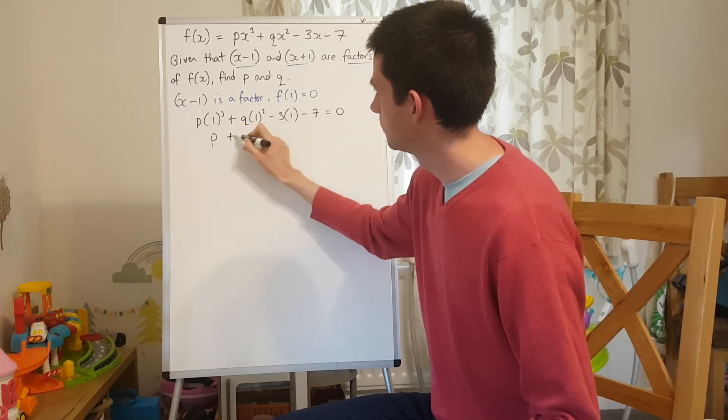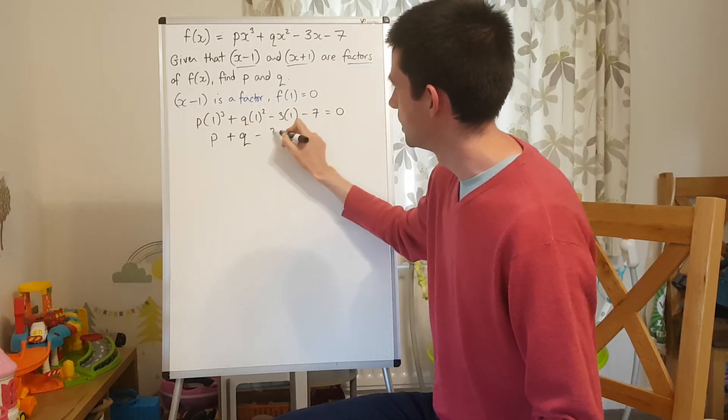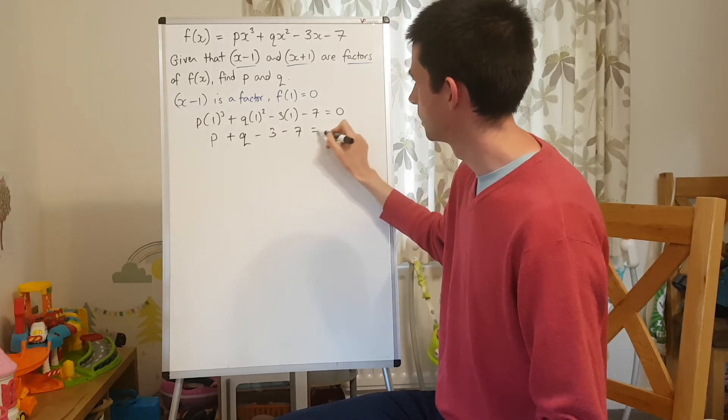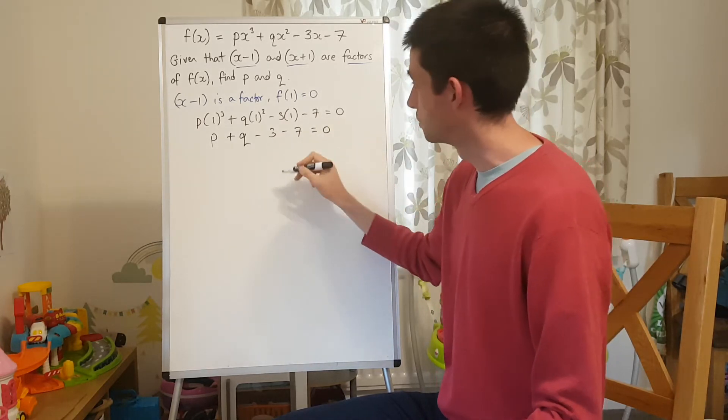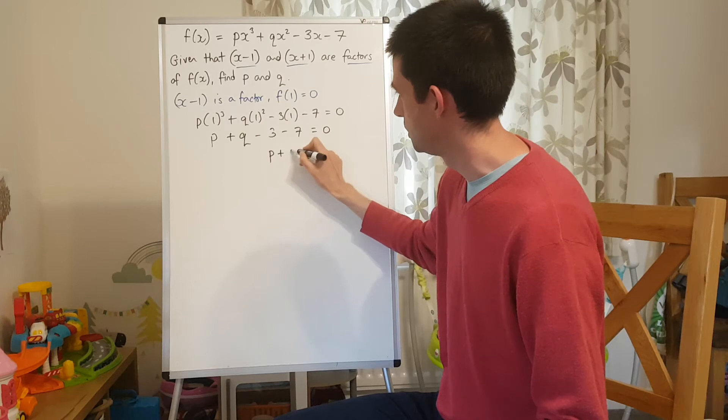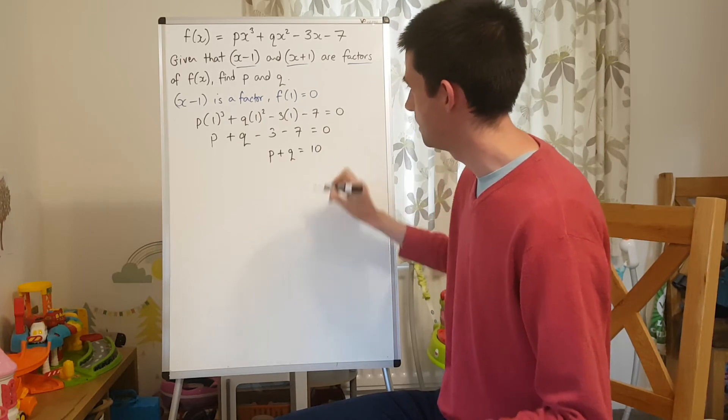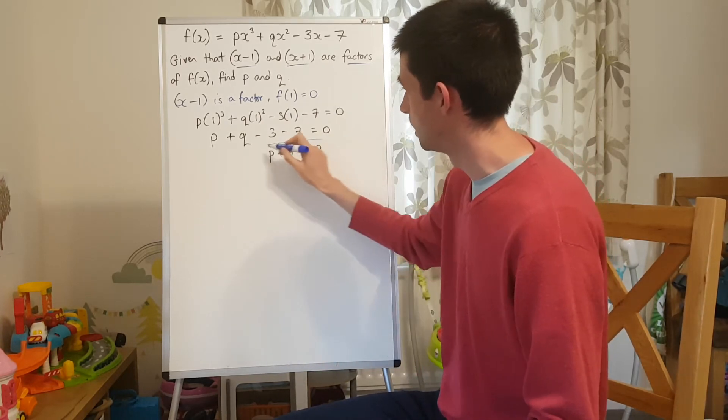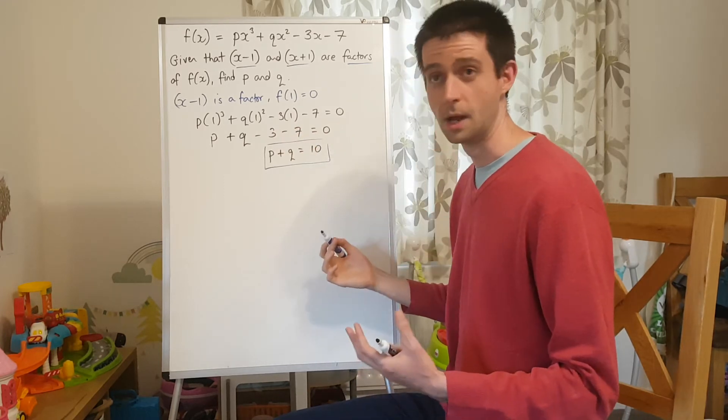So, p + q - 3 - 7 = 0. And I'm going to write that as p + q = 10. Because you might be able to see where this is going, given that I'm trying to find two unknowns.